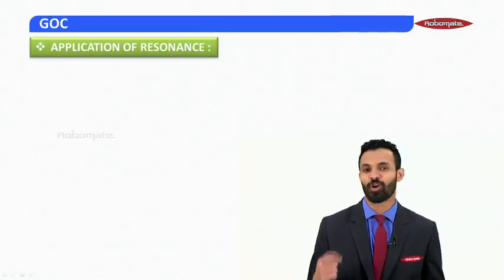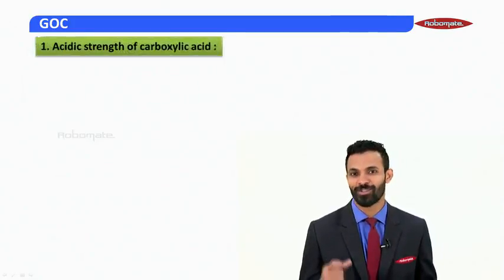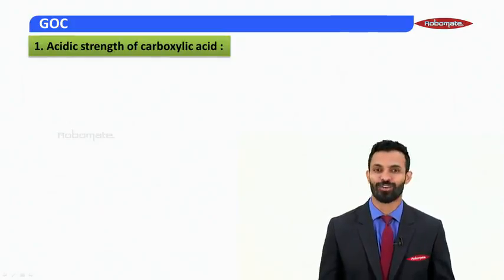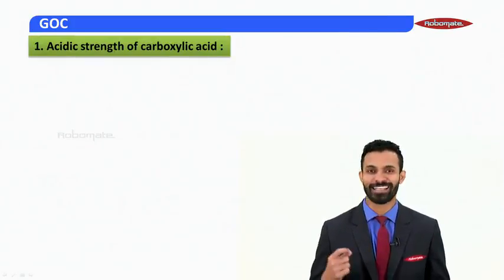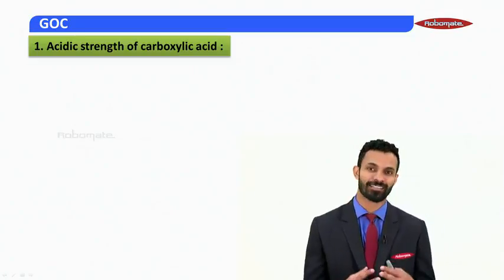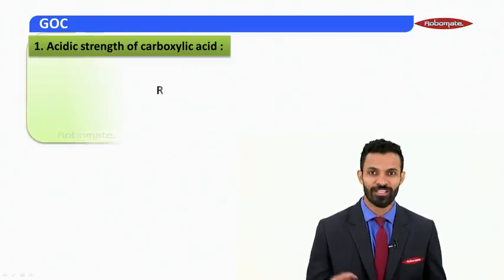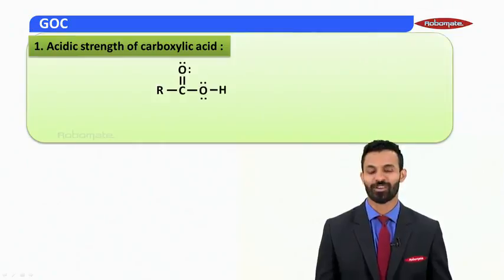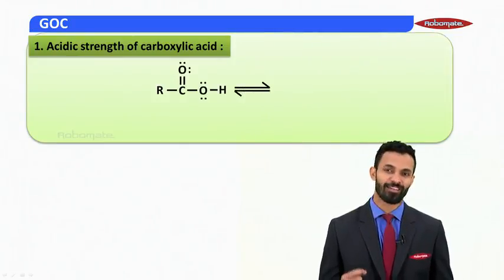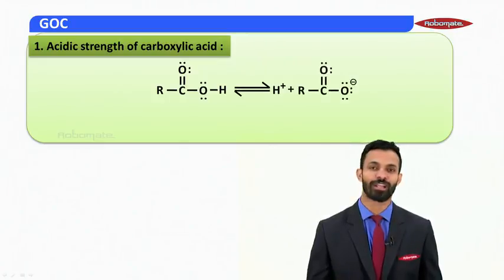The application of resonance basically helps us understand stability in compounds. Here we are going to learn the acidic strength of carboxylic acid. As we know, any compound is an acid if its conjugate base is stable. Let's look at the structure of carboxylic acid — if it donates a proton, it forms a conjugate base.